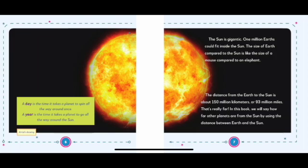The sun is gigantic. One million Earths could fit inside the sun. The size of Earth compared to the sun is like the size of a mouse compared to an elephant. The distance from the Earth to the sun is about 150 million kilometers or 93 million miles. That's really far. In this book, we will say how far other planets are from the sun by using the distance between Earth and the sun.